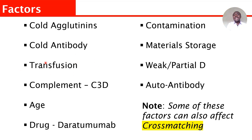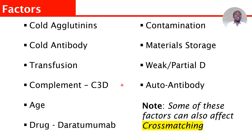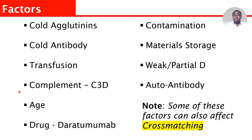Complement can also affect blood group and antibody screening — things like C3D complement. It can affect the antibody screening, antibody panel, and even the blood group. It will give you a pan-reactive result, and it is always difficult to get clean results. It will require a special technique to be able to get the blood group, antibody screening, and antibody panel done.